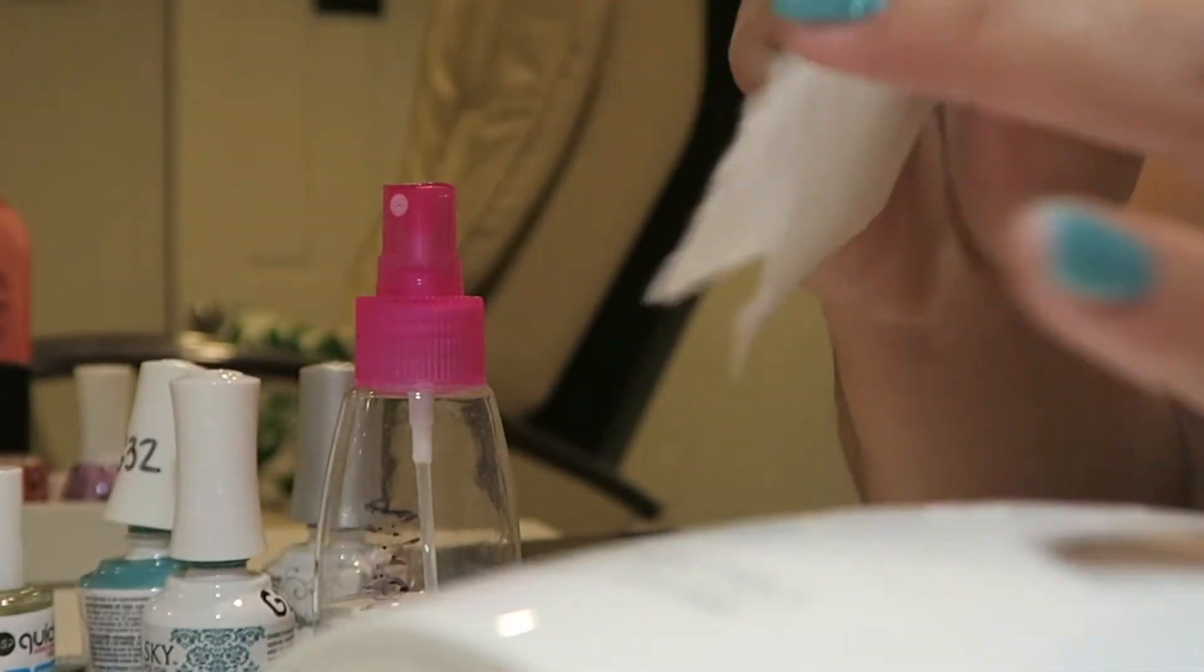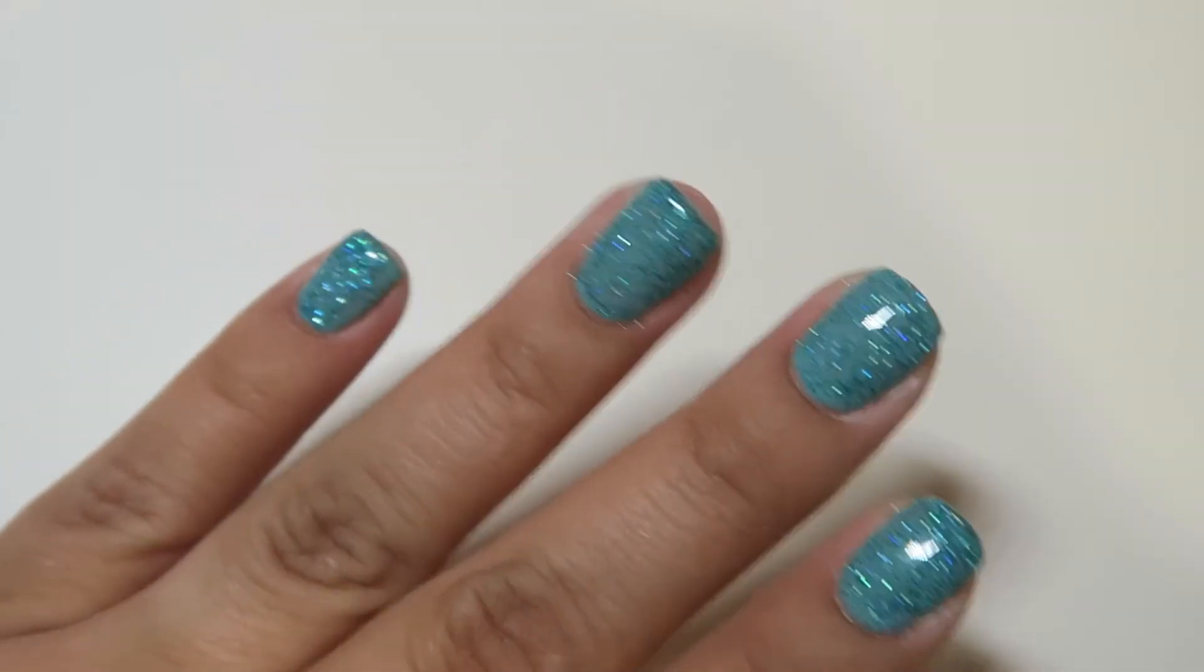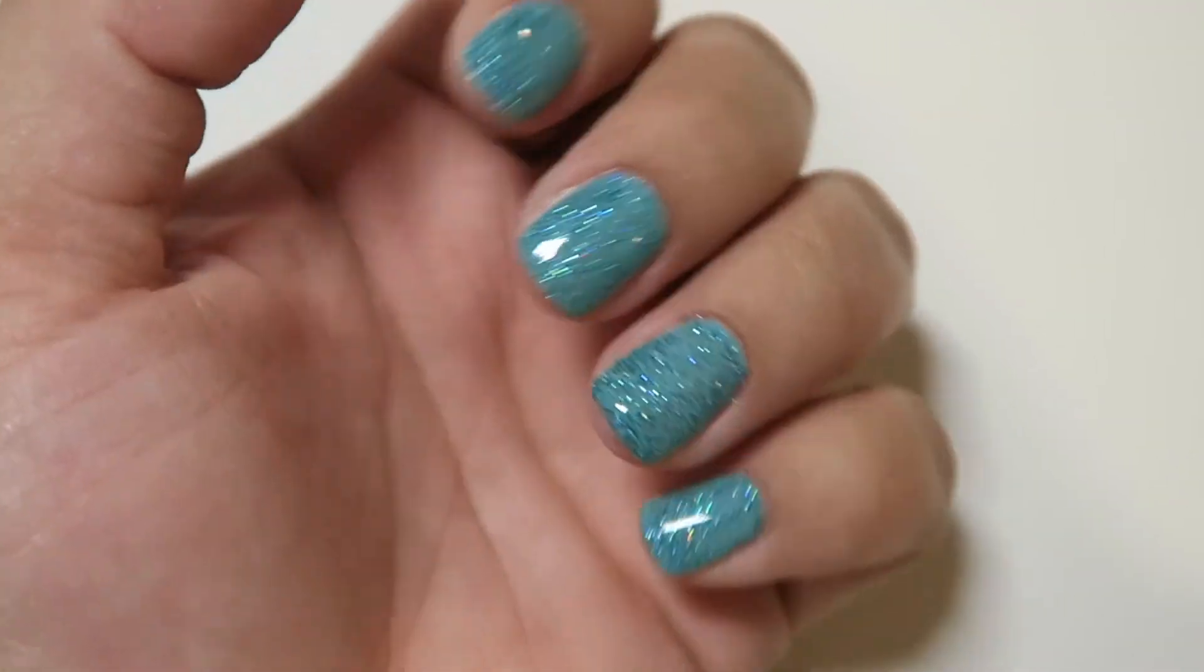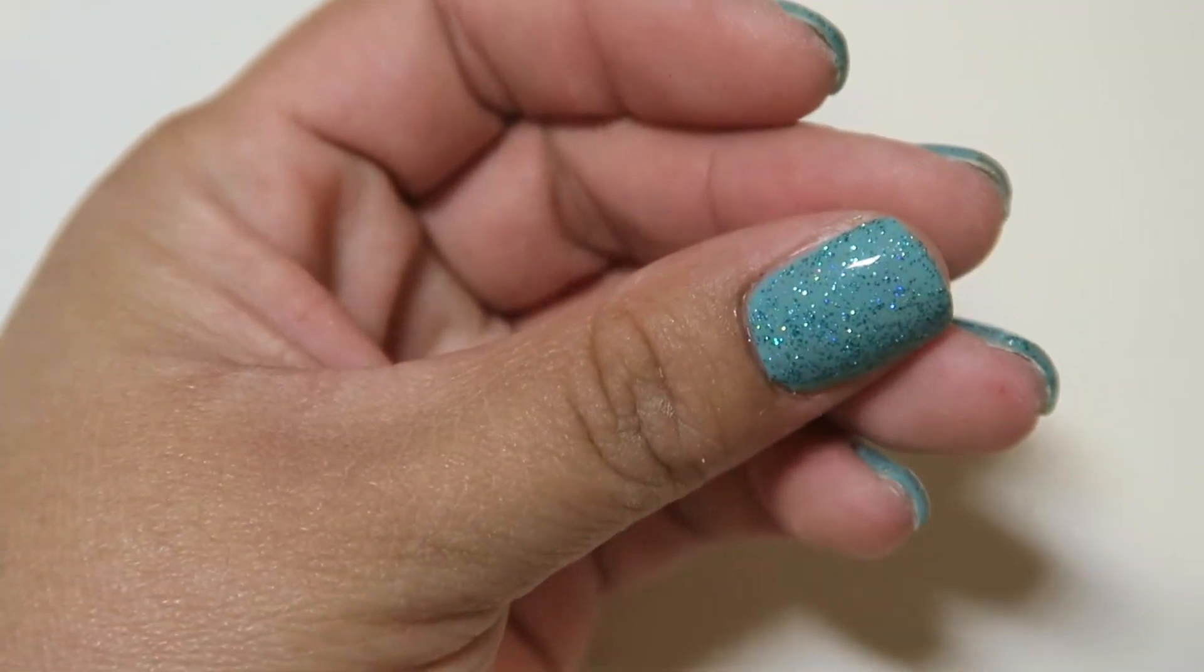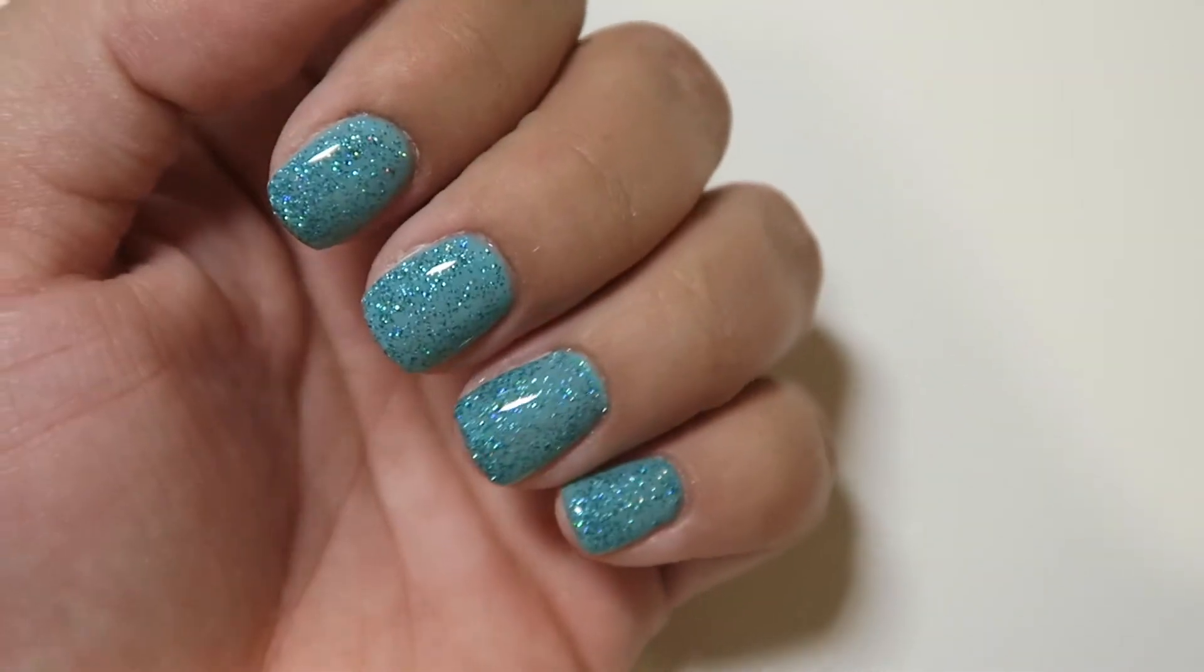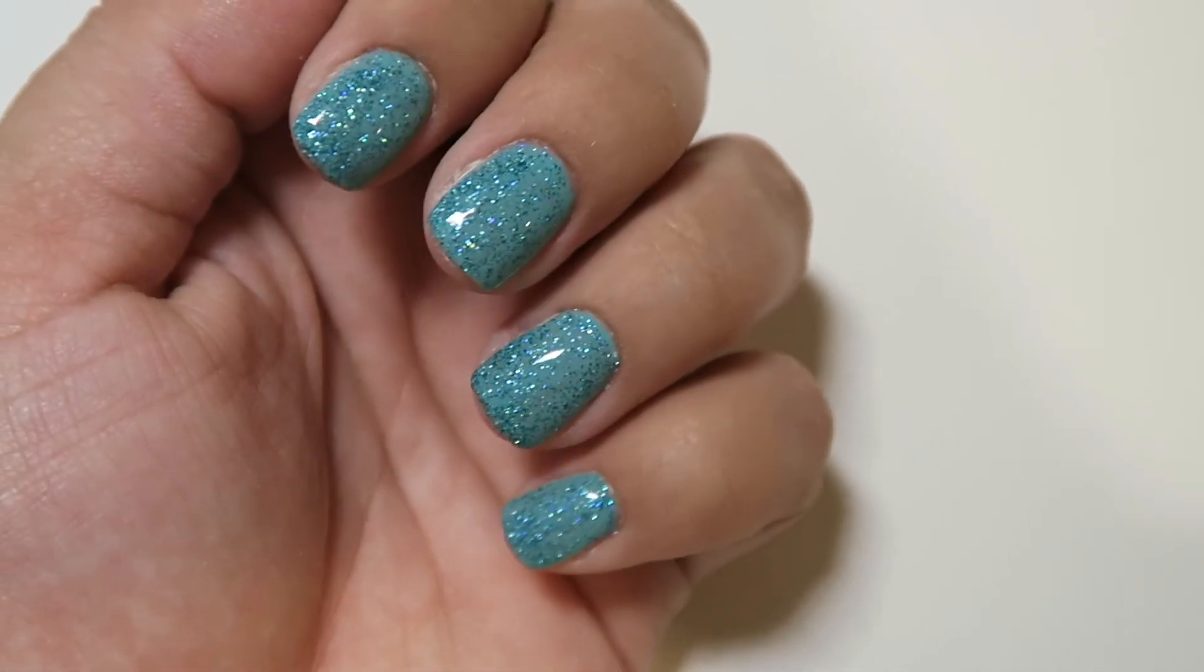Once that was done curing, I go in with a little bit of alcohol on a paper towel and I just cleansed my nails to get rid of that sticky layer. So this is what they look like. You can see they're not super thick. Since they are really short, I'm just putting a little bit of strength on my nails, which are really thin and frail. I like to have an enhancement on them at all times.